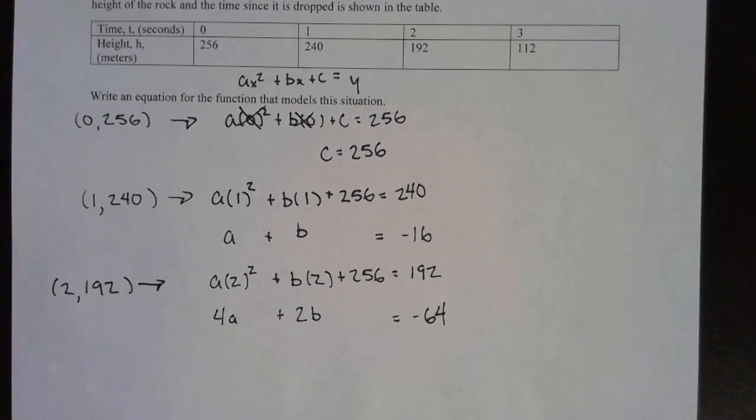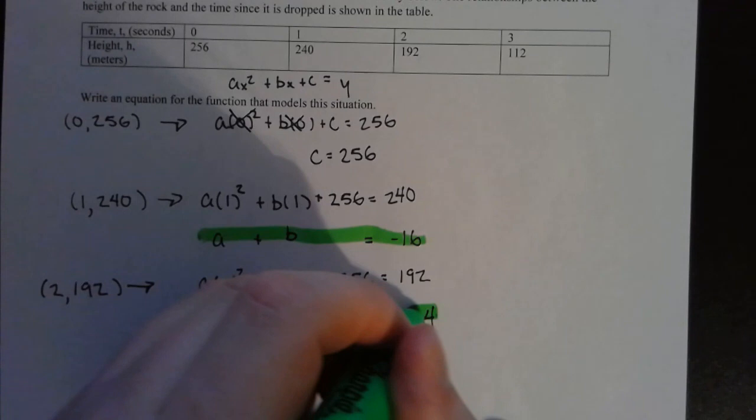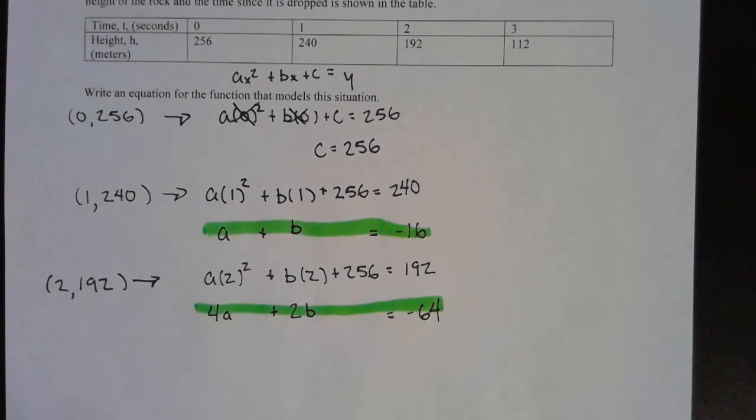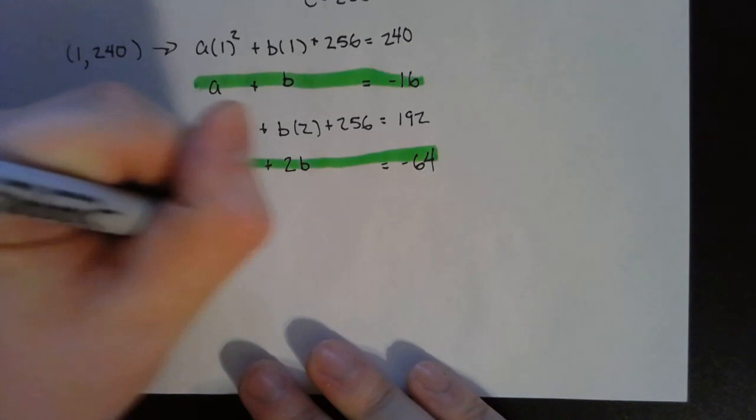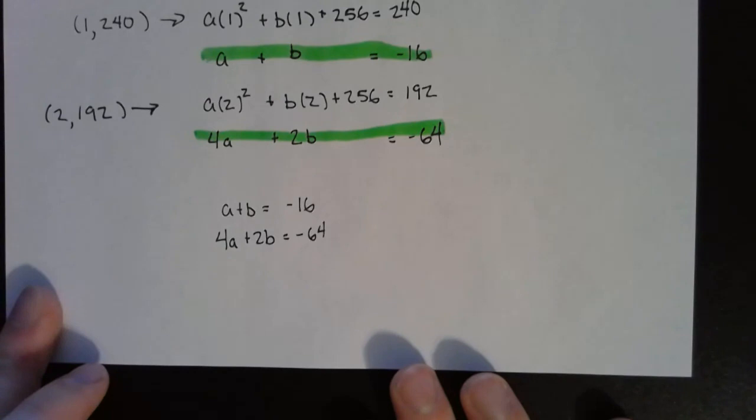So now I have these two equations with two unknowns. I have this equation right here and I have this other equation right here. And they both have the missing a and b values in them. So I'm going to set up a system using those two equations. So a plus b equals negative 16. 4a plus 2b equals negative 64.